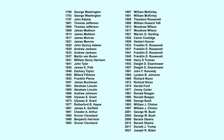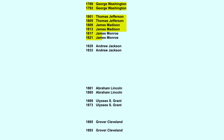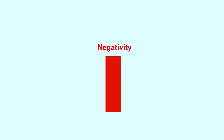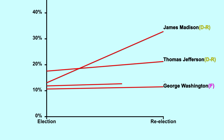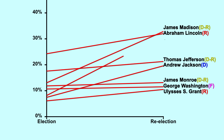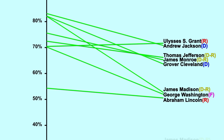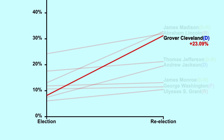If we look at the presidents who were re-elected before the 20th century, we see a pretty consistent trend: the second inaugural speech is always more negative than the first. Washington, Jefferson, Madison, Monroe, Jackson, Lincoln, Grant, and Cleveland all had their negativity scores increase for their re-election speeches, sometimes as high as 23%. They also had similar decreases in their positivity scores.